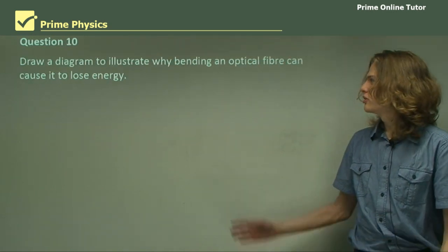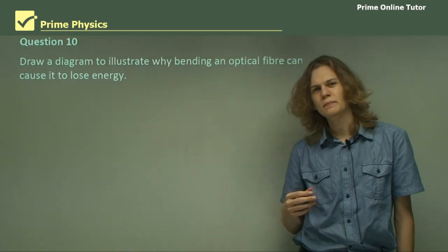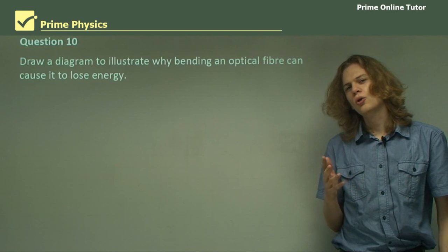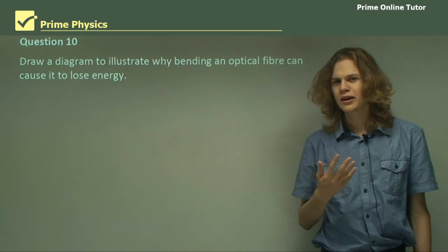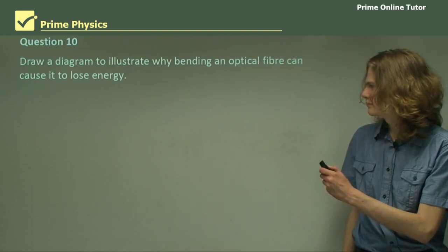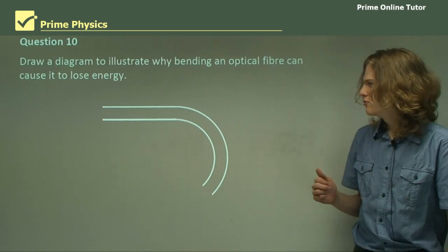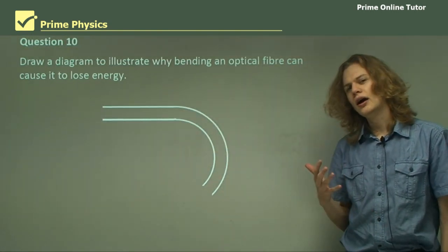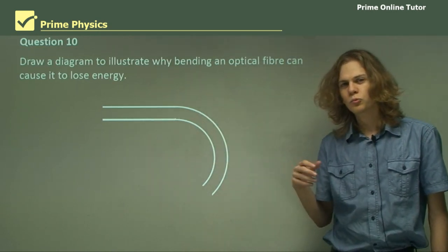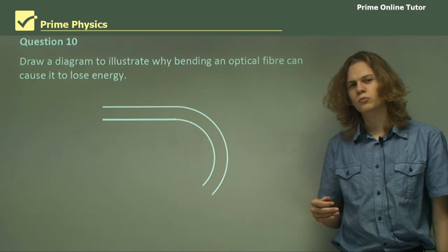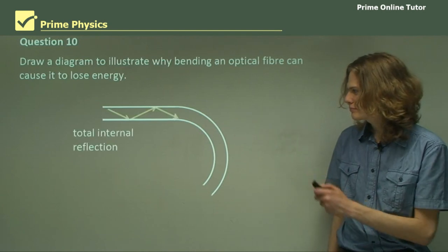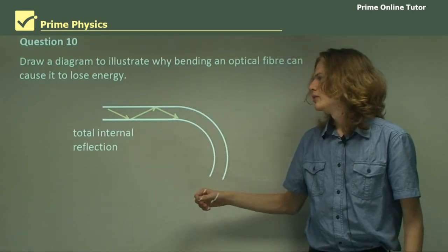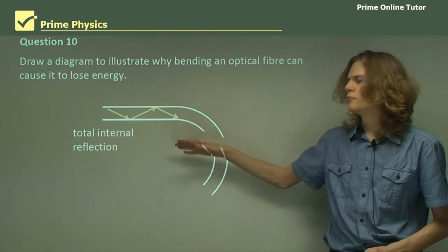Finally, question 10. Draw a diagram to illustrate why bending an optical fiber can cause it to lose energy. That is, if we were to take an optical fiber and twist it very, very tightly, we would no longer get total internal reflection. Here we have an optical fiber — I've only drawn the core of it; if we were to draw the cladding, we'd get an extra layer around each edge. Now let's draw how the light comes into the optical fiber in the straight part — we'll have it coming in at a very large angle, which means that we'll get total internal reflection occurring. The light tries to pass into the cladding but cannot, because it is reaching the boundary at an angle larger than the critical angle.